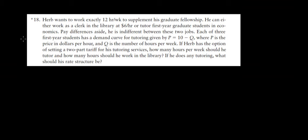Let's have a look at question 18 in this video. We want to work exactly 12 hours per week. We can do this by working as a clerk for $6 an hour or by tutoring some students. We are indifferent between these two jobs. We have three students that demand tutoring, with individual demand given by the function P = 10 - Q.